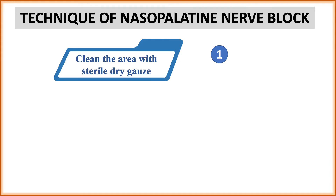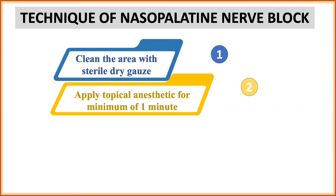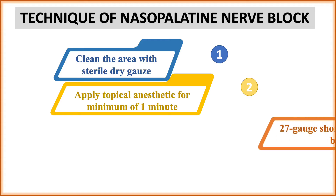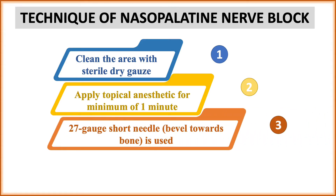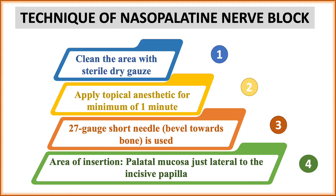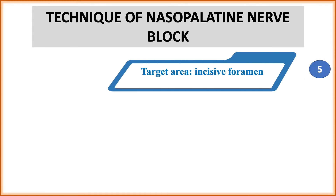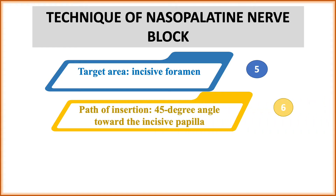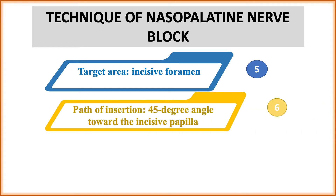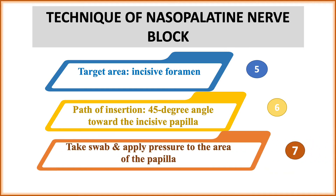The technique of the nasopalatine nerve block: first, clean the area with a dry sterile gauze, then apply topical anesthetic for a minimum of one minute for painless insertion of the needle. Use a 27-gauge short needle with the bevel towards the bone. The area of insertion is the palatal mucosa just lateral to the incisive papilla. The target area is the incisive foramen. Insert the needle at a 45-degree angle towards the incisive papilla, behind which the incisive foramen is located.